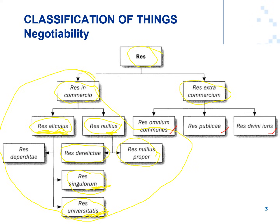Res omnium communis refers to things that are common to all — for example, the sea, the air we breathe, and running water. The second type is res publici, which refers to public things like public roads, rivers, and harbors. Then we have res divini iuris, which refers to religious things — for example, graves, graveyards, and tombstones.